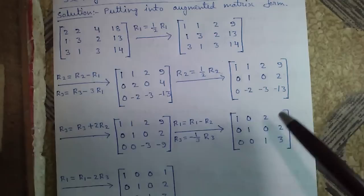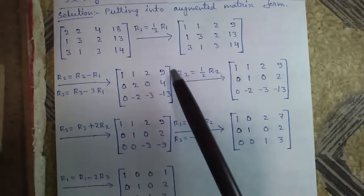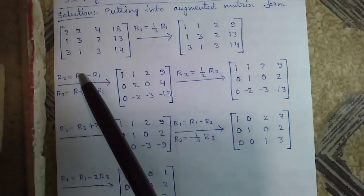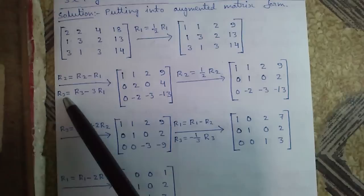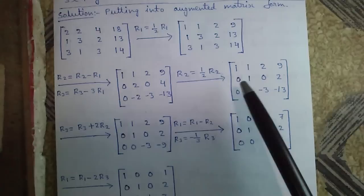Now again applying elementary row operations — we can see row 1 is multiples of 2, so we will divide it by 2. R1 equals half times R1, so we will get 1 here. To bring a 0 here we subtract R1 from R2, and to bring a 0 here we subtract 3 times R1 from R3. So R2 equals R2 minus R1, and R3 equals R3 minus 3 times R1. We have got two zeros. Now R2 is also multiples of 2, so R2 equals half times R2, giving us 1 at the middle position.